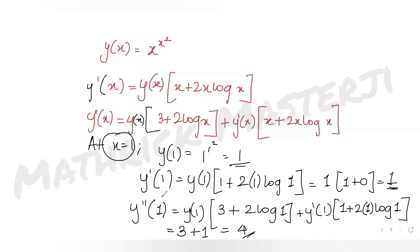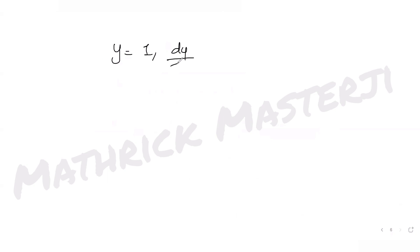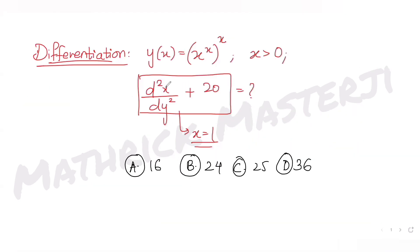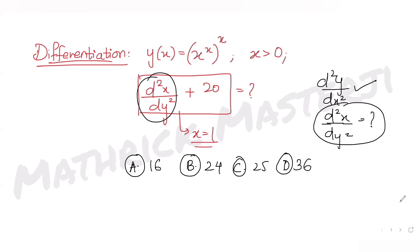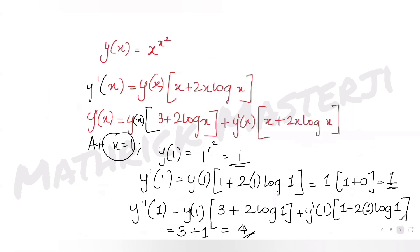So we have y(1) = 1, dy/dx at x=1 equals 1, and d²y/dx² at x=1 equals 4. However, the question is not asking for d²y/dx²; it's asking for d²x/dy². So we need to develop a relation between these two.